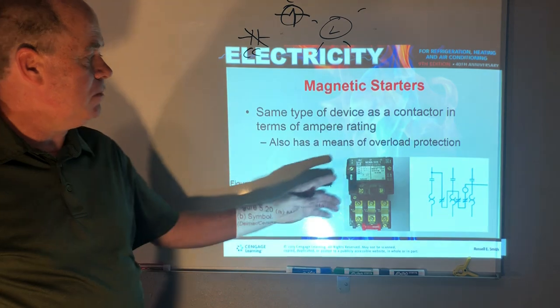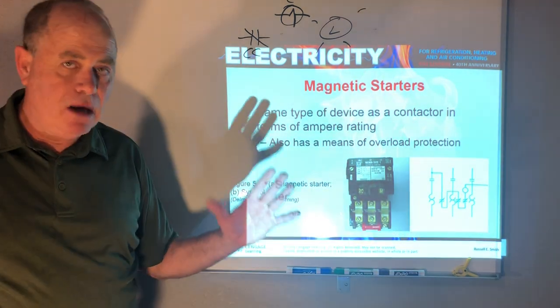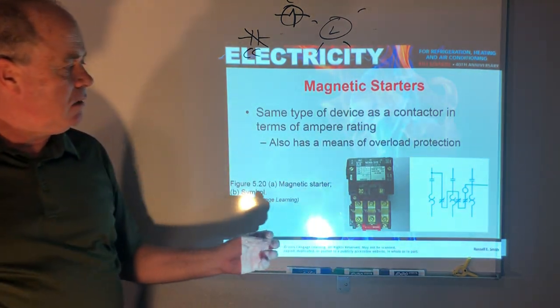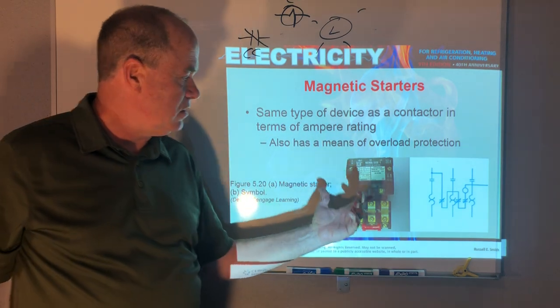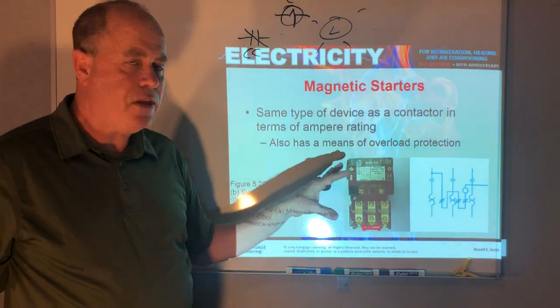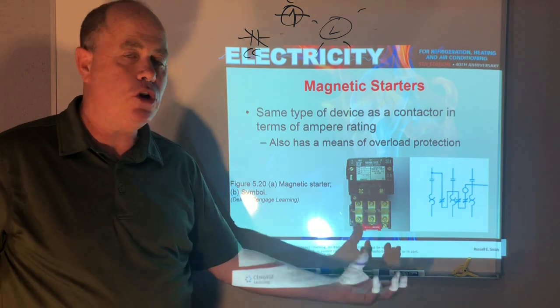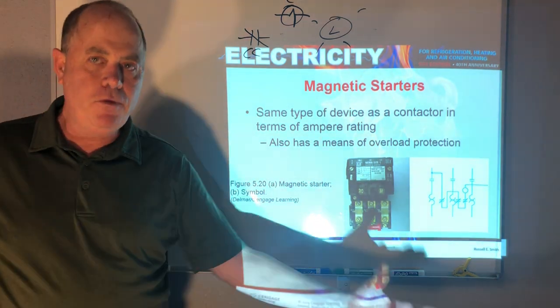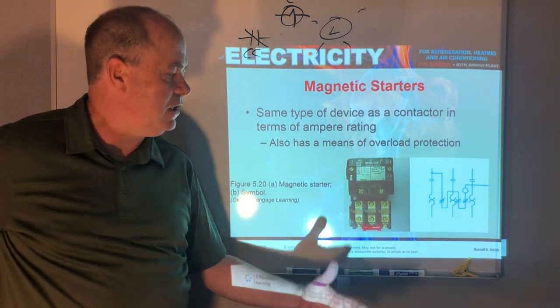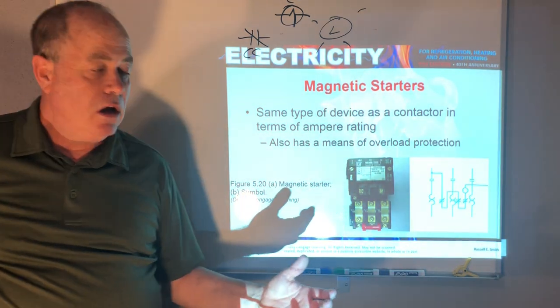Now this is a mag starter, a motor starter, also sometimes referred to more in electrical work as a line starter. And it's nothing more than a contactor that has built in overload protection for the load that it serves, like a very large fan or compressor.